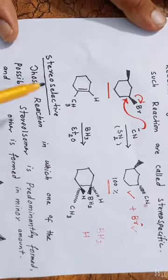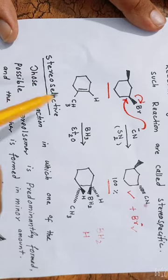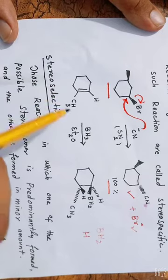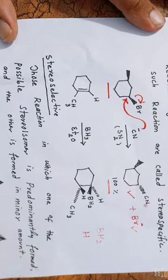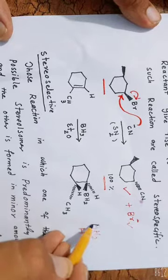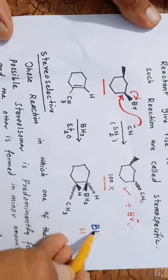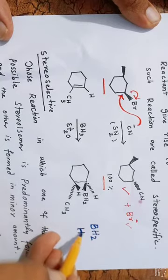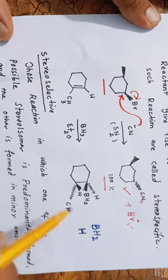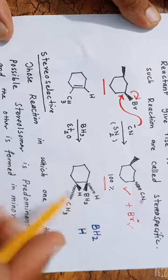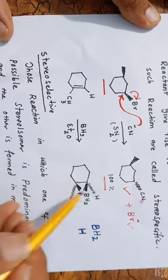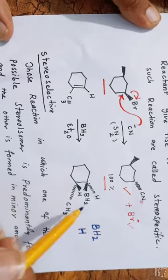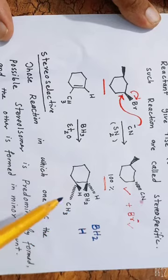For example, if you want to carry out hydroboration, in hydroboration this BH2 and hydrogen will be added to the same side. As it is clear from this, both are added at the same side, meaning on the front side.